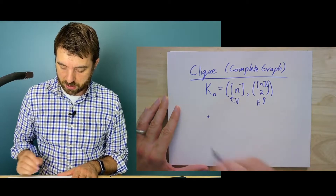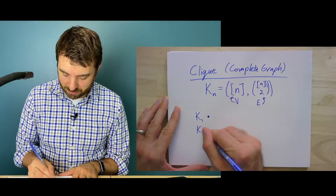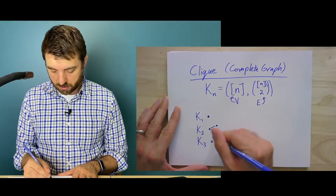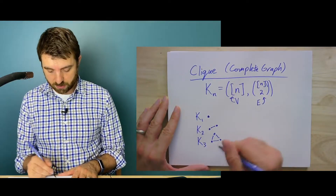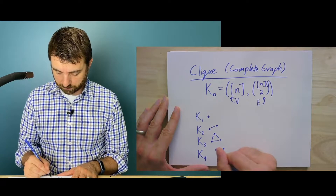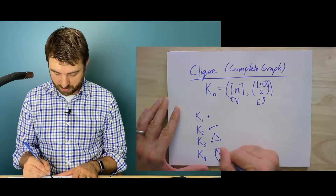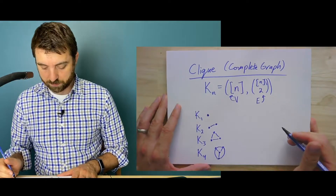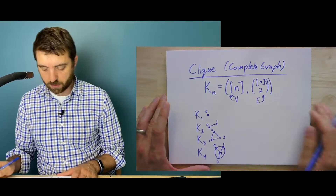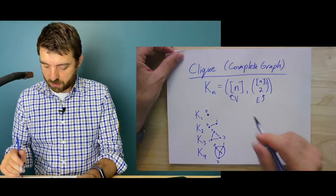In pictures: K1 is just one vertex, very simple. K2 is two vertices and the one possible edge between them. K3 looks like a triangle. K4 — you get the picture — you might want to draw it with a crossing, but it's fun to draw it without any crossings. That is our complete graph on n vertices, or the clique K_n.